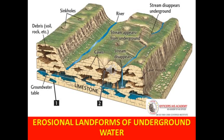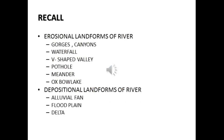We will see today's topic. So just to recall what we discussed in our previous class — the landforms of rivers. We discussed both the erosional and depositional landforms of rivers. The erosional landforms of rivers were gorges and canyons, waterfall, V-shaped valley, pothole, meander and oxbow lake.